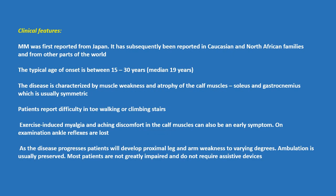Clinical features: Miyoshi myopathy was first reported from Japan. It has subsequently been reported in Caucasian and North African families and from other parts of the world. The typical age of onset is between 15 to 30 years, with a median of 19 years.